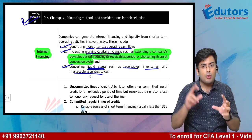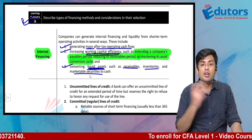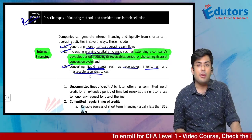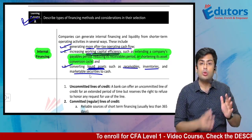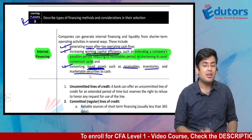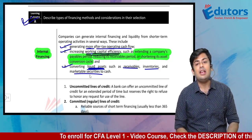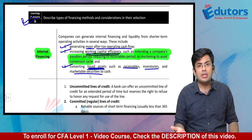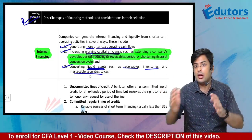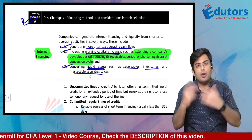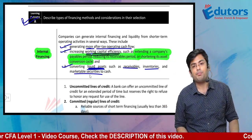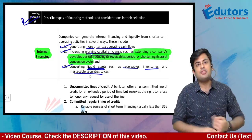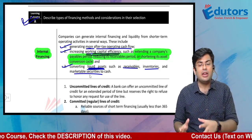Now we are going to talk about external finance. For external finance, there are two clear-cut classifications: number one — through financial intermediaries; number two — through capital markets. Capital markets are where you go for long-term financing. Capital markets are markets where securities issued have a maturity beyond one year. If it is less than one year, you go to the money market.